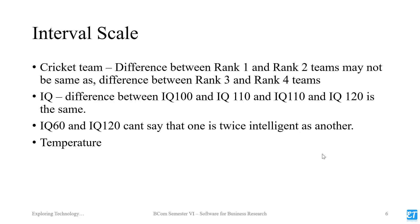Similarly, temperature has no absolute zero in practical terms — we cannot say zero temperature means zero heat. However, salary can have an absolute zero: if you pay $0, there is no salary. At the interval scale, there is no absolute zero for the variable. For such variables — like IQ or temperature — where differences are equal but there is no absolute zero, we measure using the interval scale.